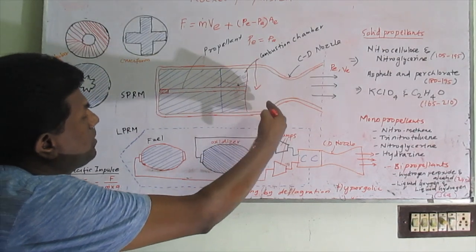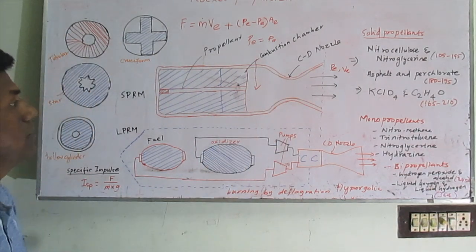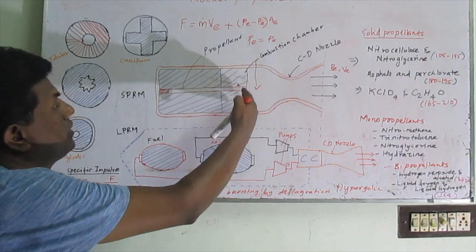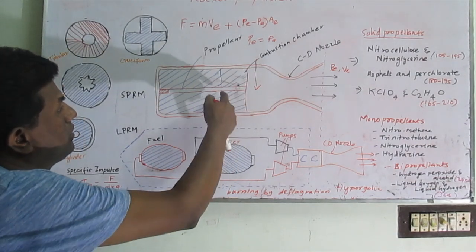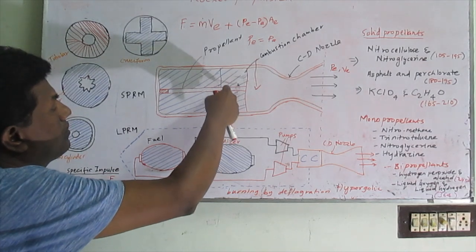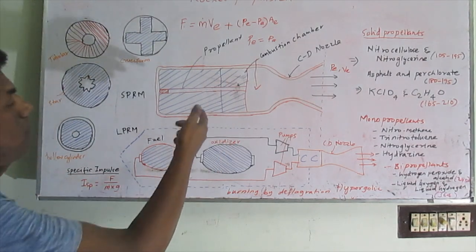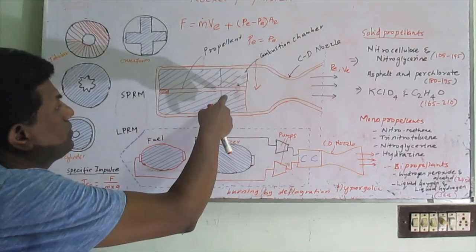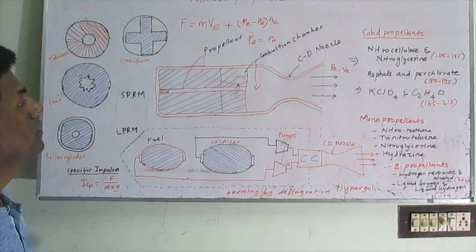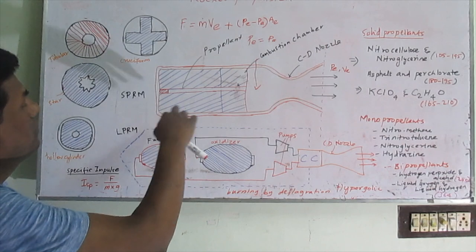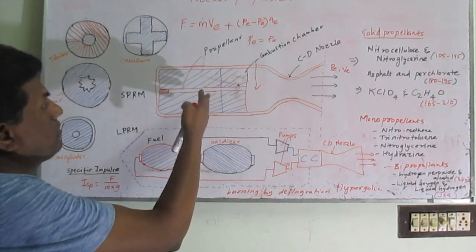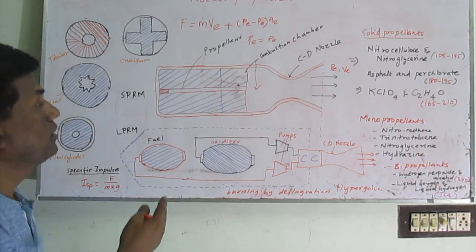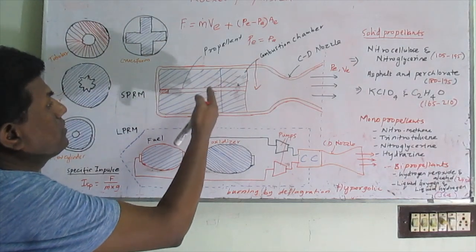The burning rate of the propellant can be controlled. The burning rate depends upon the size and shape of the propellant and also the combustion chamber pressure. The propellant grain is a combination of both fuel and oxidizer, and propellant grains can have different shapes and patterns.